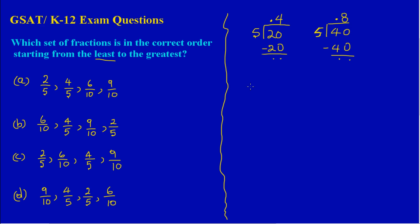Now let's check six over ten. Ten goes on the outside and six goes on the inside. Ten into six — I can't, so I place a point above the six and add a zero, making sixty. Ten into sixty goes six times; six tens give sixty, and sixty minus sixty leaves zero. So six over ten equals 0.6.